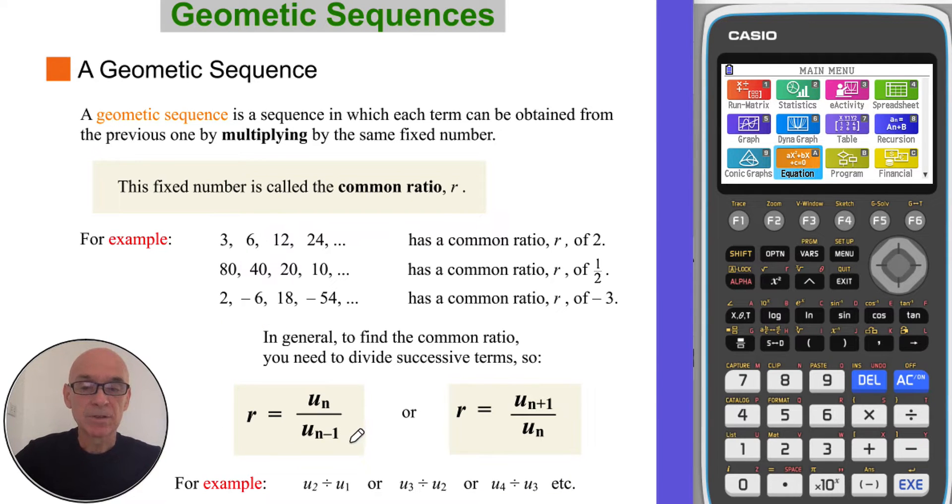In general to find the common ratio you need to divide consecutive or successive terms as shown in these formulas here. In practice you will probably divide the second term by the first or perhaps the third by the second or even the fourth by the third.